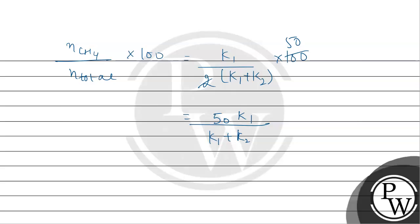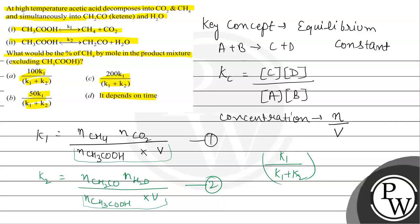By this, we can say the percentage of methane by mole in the product mixture excluding acetic acid is given by this expression. This is Option B, which says 50K1 divided by K1 plus K2. Options A, C, and D are incorrect. This is the final answer. Hope you understood it well. Best of luck.